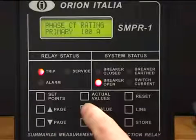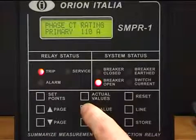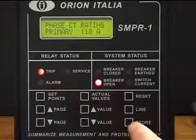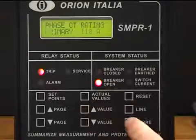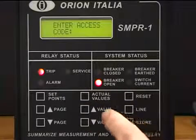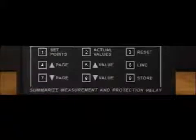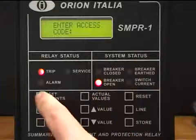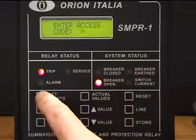In this example, we modify the value of the phase CT rating primary. Pressing the start button, the SMPR will ask you for the access code that has to be introduced by the keypad, as in the picture. This 3-digit code — in this example — is 3 times 1.